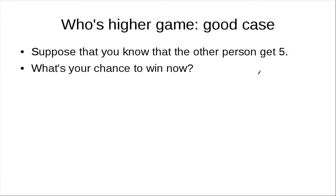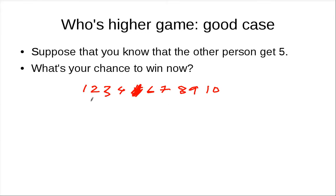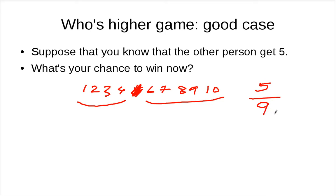Now suppose you happen to know that the other person got five. What's your chance to win? The numbers are 1 through 10, but 5 is already taken. You have nine choices left. There are four choices where you lose (1, 2, 3, 4) and five choices where you win (6, 7, 8, 9, 10). So the probability that you win is 5 out of 9 — a little bit higher than one-half.